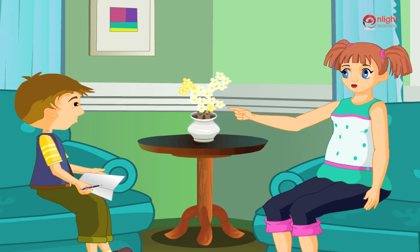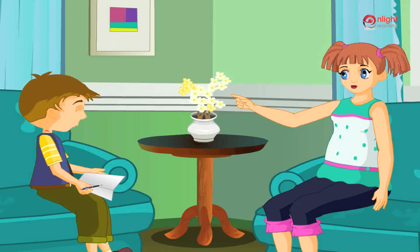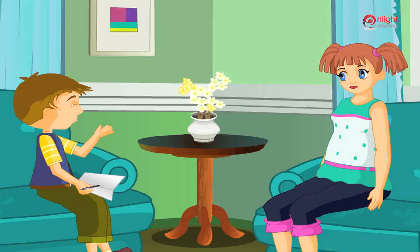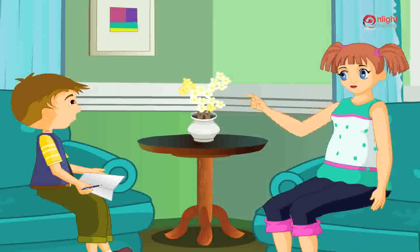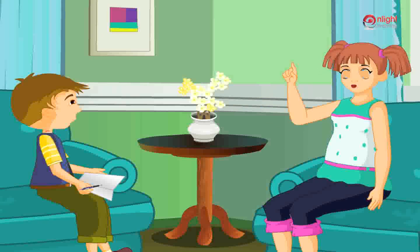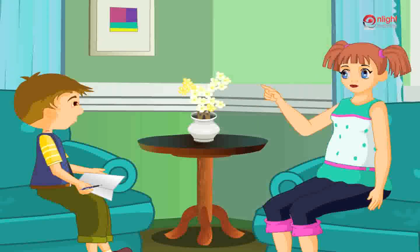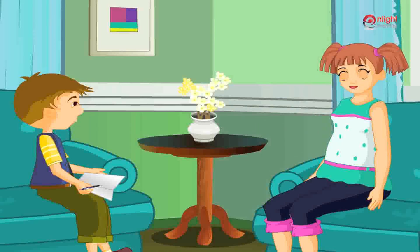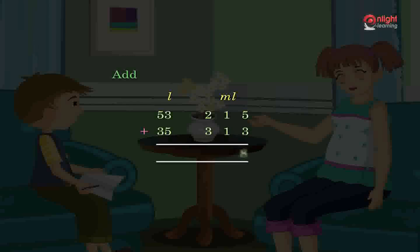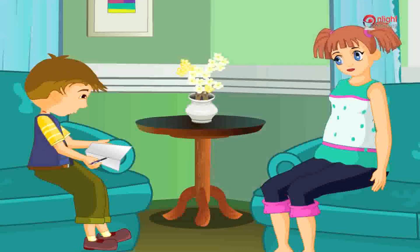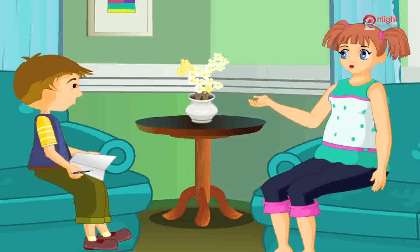Now try adding the numbers without converting liters to milliliters. Listen — arrange the numbers and add milliliters first. If the number of milliliters is more than the hundreds place, carry the thousands digit to the liter and add. For example, add 53 liters 215 milliliters and 35 liters 313 milliliters. This is quite easy — simple addition!